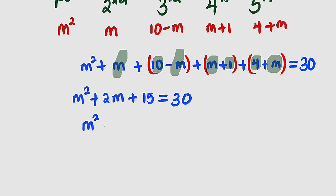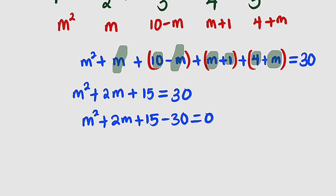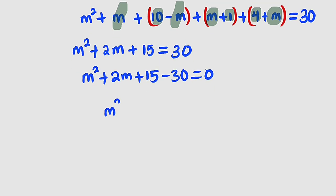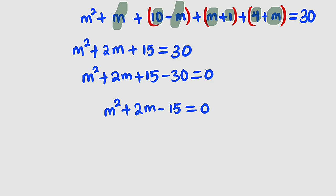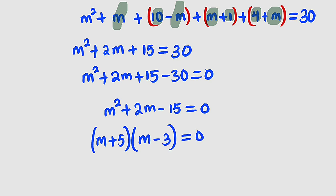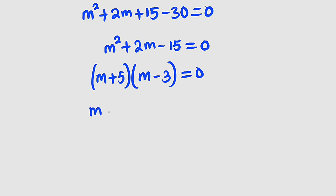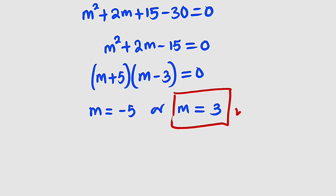Bringing 30 to the left: m squared plus 2m plus 15 minus 30 equals 0, which simplifies to m squared plus 2m minus 15 equals 0 — a quadratic equation in m. Factorizing: we need two numbers that multiply to negative 15 and add to positive 2, which are 5 and negative 3. So (m plus 5)(m minus 3) equals 0, giving m equals negative 5 or m equals positive 3. Since all digits must be positive, we discard m equals negative 5 and take m equals 3.